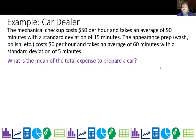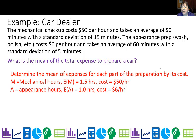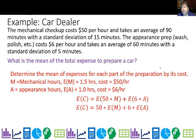What is the mean of the total expense to prepare a car? We have some multipliers. Expected value for mechanical is 1.5 hours at $50 per hour. Expected value for appearance is 1 hour at $6 per hour. So E(expense) = 50(1.5) + 6(1) = $81 is the expected expense.